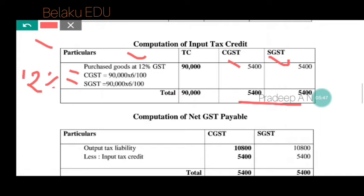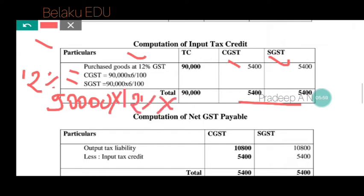The input tax credit is CGST 5,400 and SGST 5,400. Alternatively, this can be calculated as 90,000 × 12% × 1/2 = 5,400, giving the same answer of 5,400.